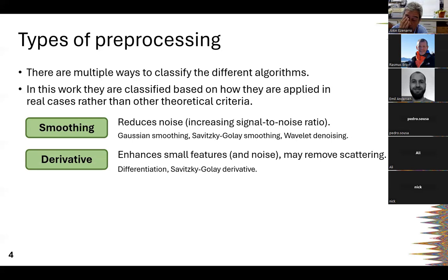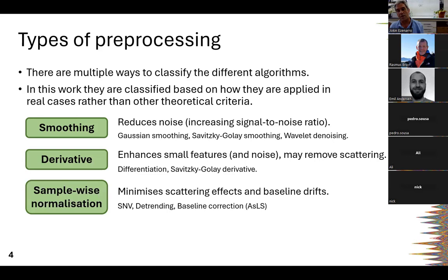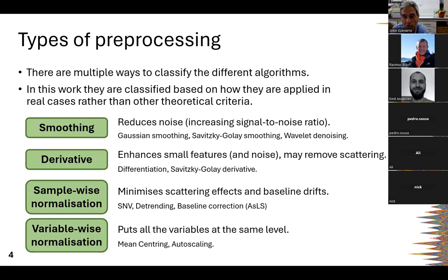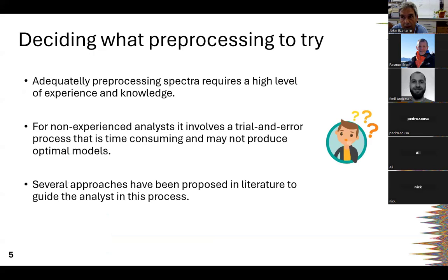The second group is derivatives, which may enhance small peaks and features — though if not correctly applied they can also amplify noise. We apply two types: differentiation and Savitzky-Golay first and second derivatives. The third category is sample-wise normalization, intended to minimize scattering effects and baseline shifts — including SNV, MSC, and asymmetric least squares baseline correction. The fourth is variable-wise normalization, to give all variables equal importance: mean centering and auto-scaling.